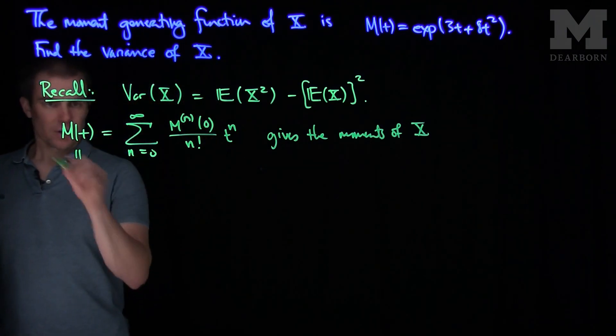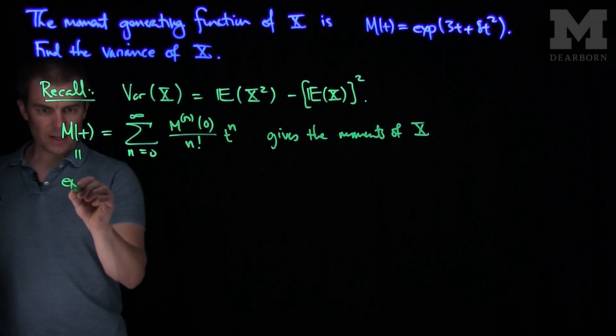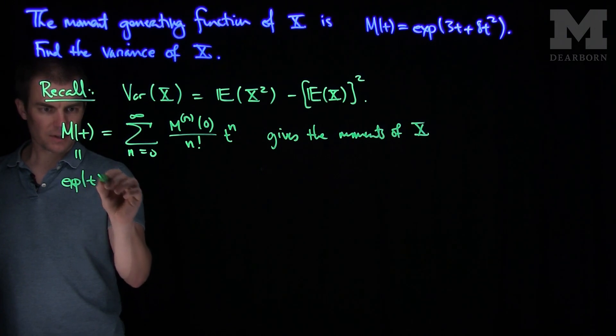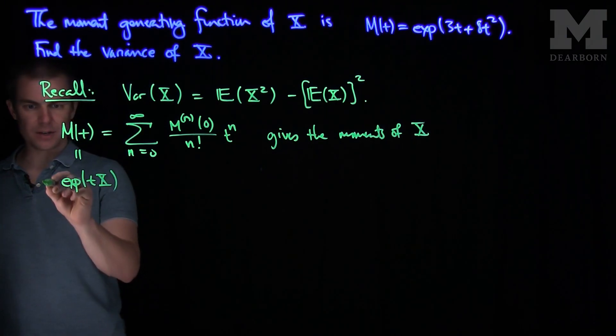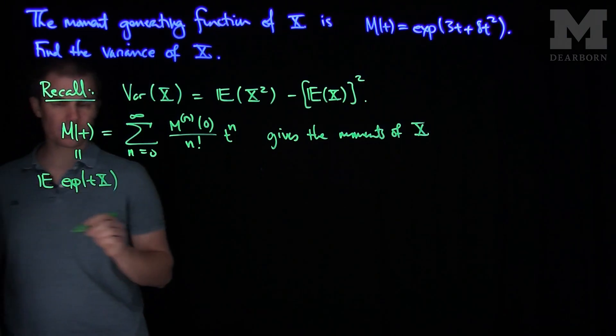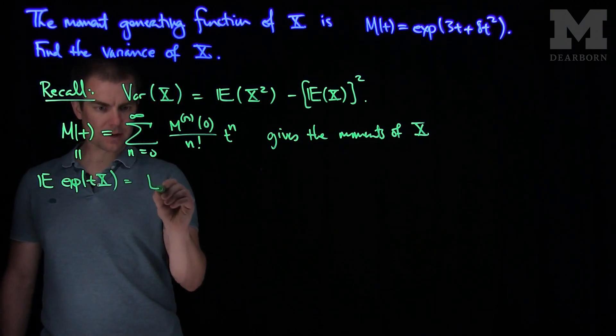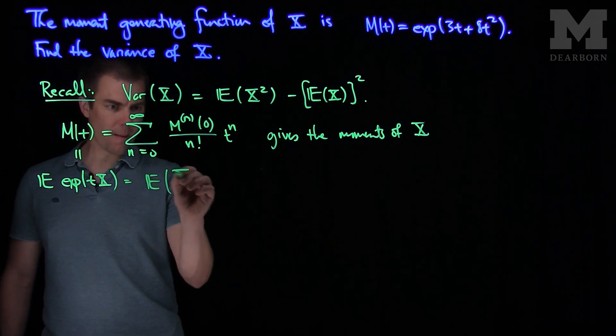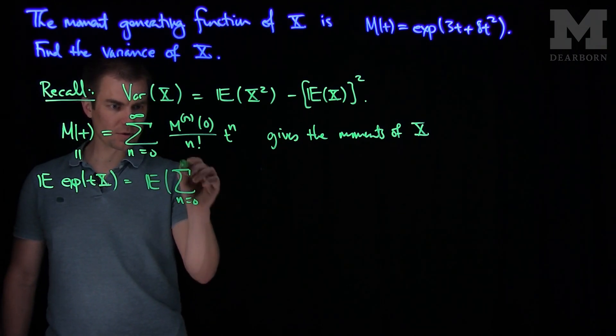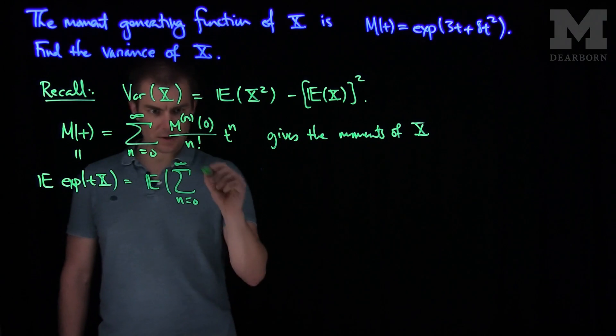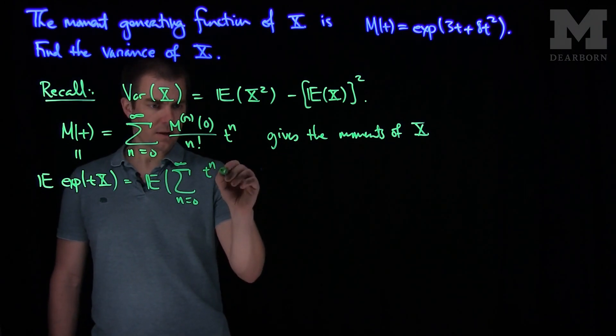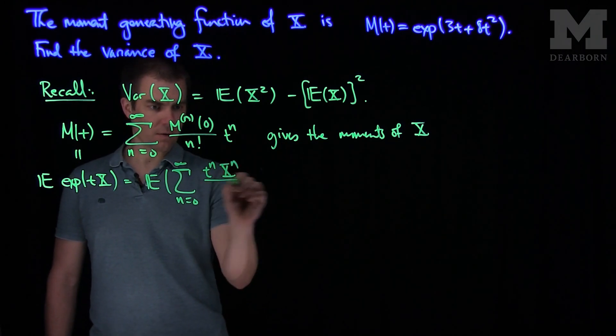Because, by definition, the moment generating function is E[exp(tX)], the expected value of this expression. And so what that will be is the expected value of the sum, n goes from 0 to infinity, of t to the n, X to the n over n factorial.